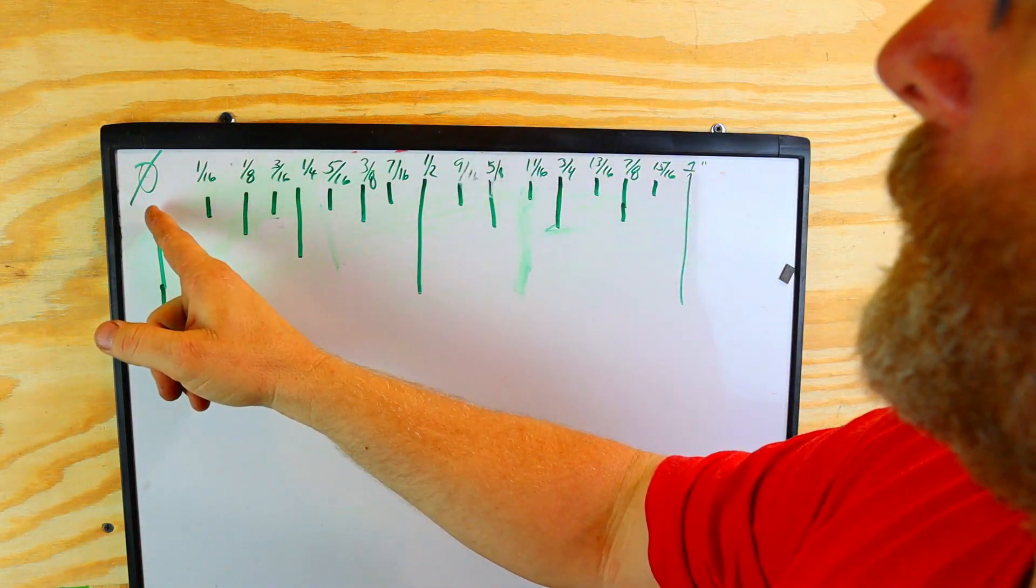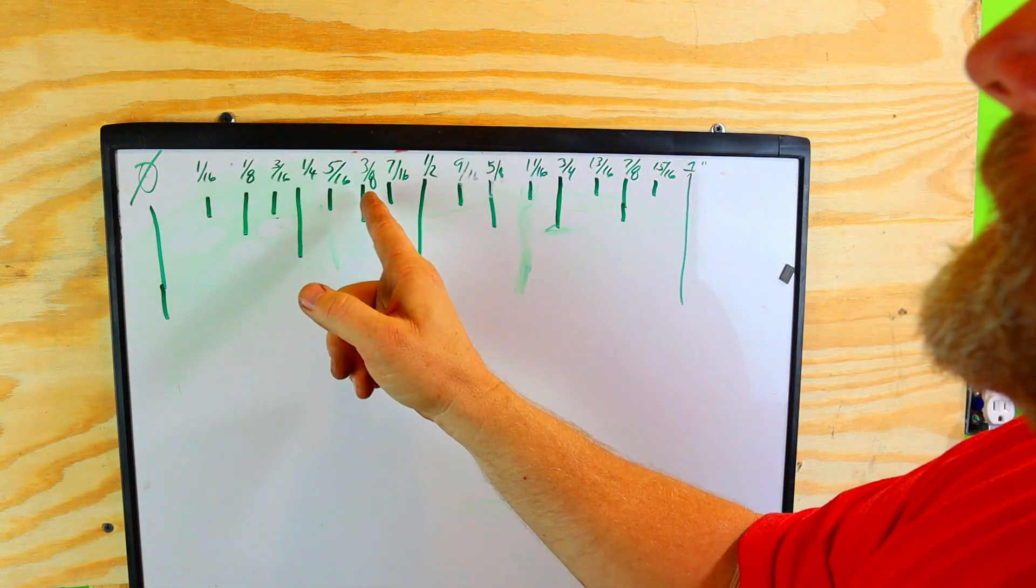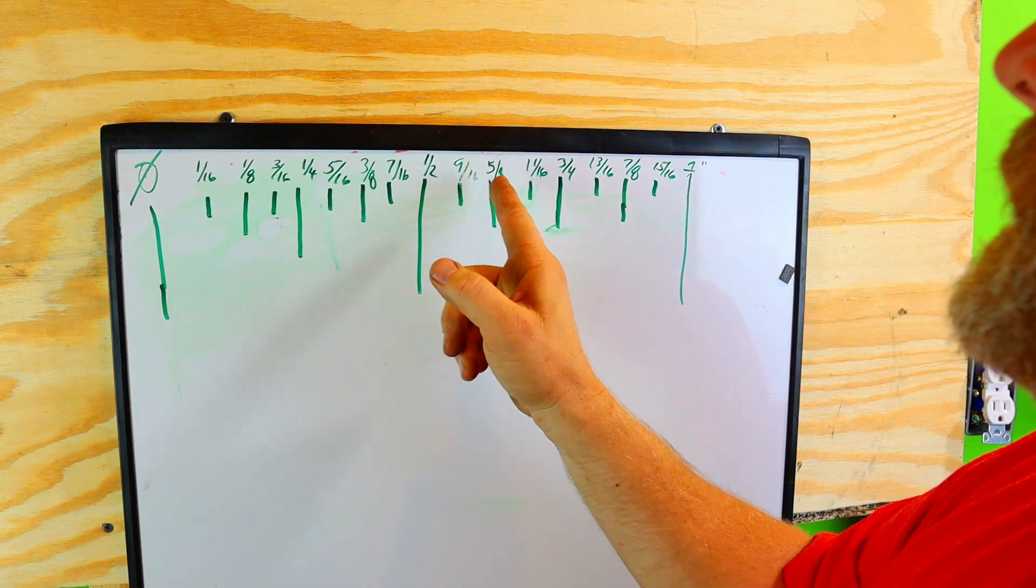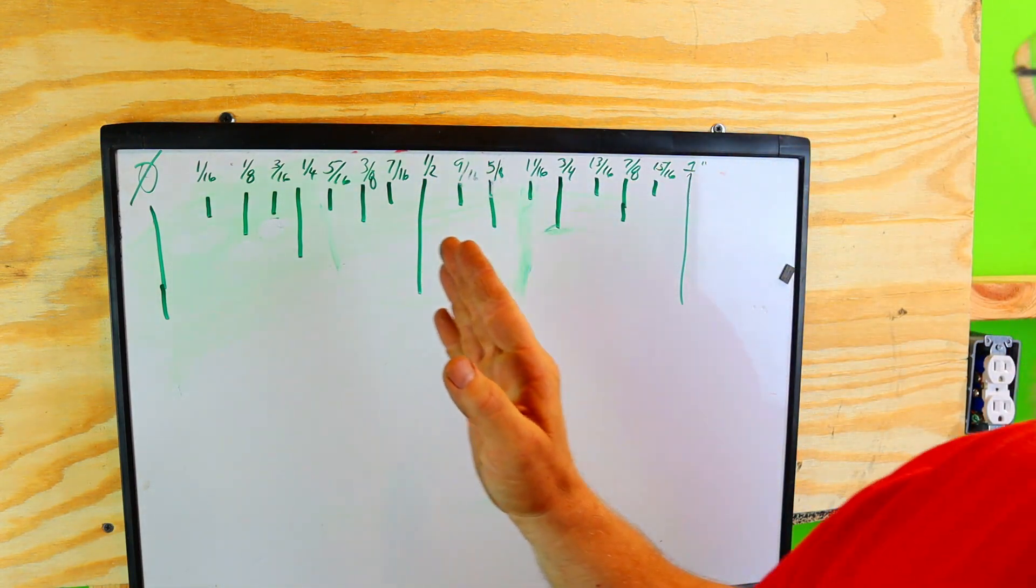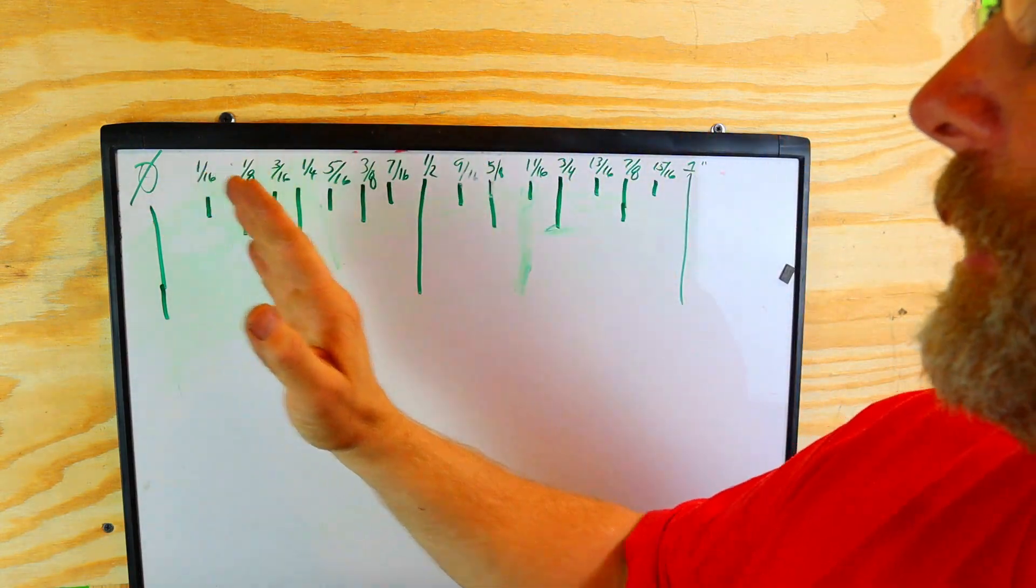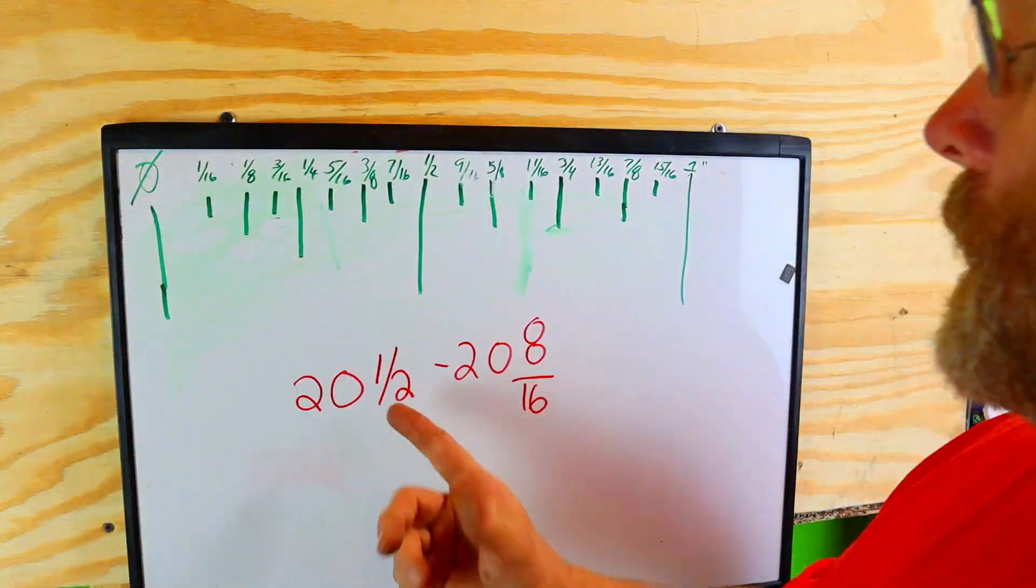Now this is 0, 1, 2, 3, 4, 5, 6, 7, 8, 9, 10, 11, 12, 13, 14, 15, and then 16. So we can say that this right here is zero to one inch.